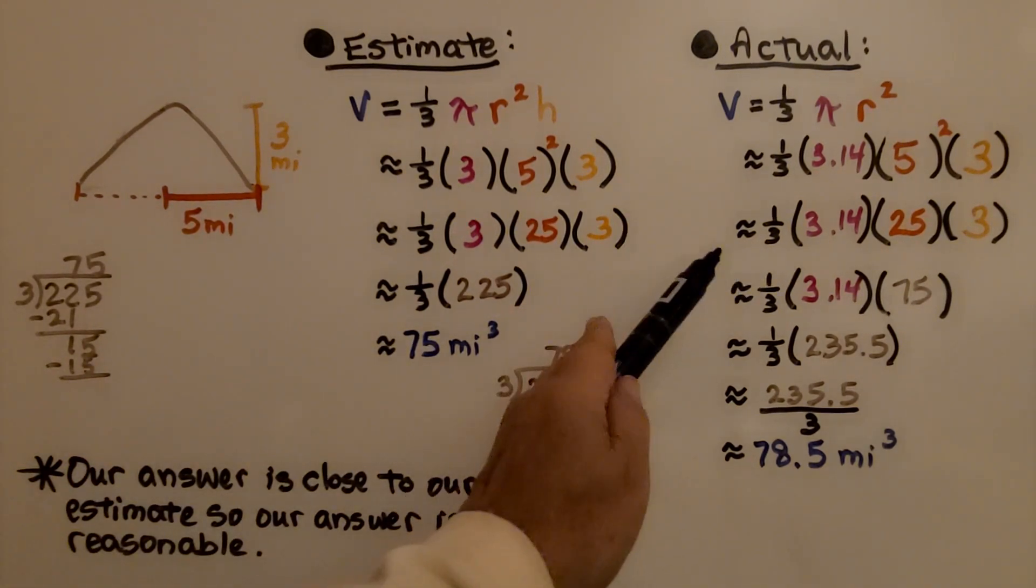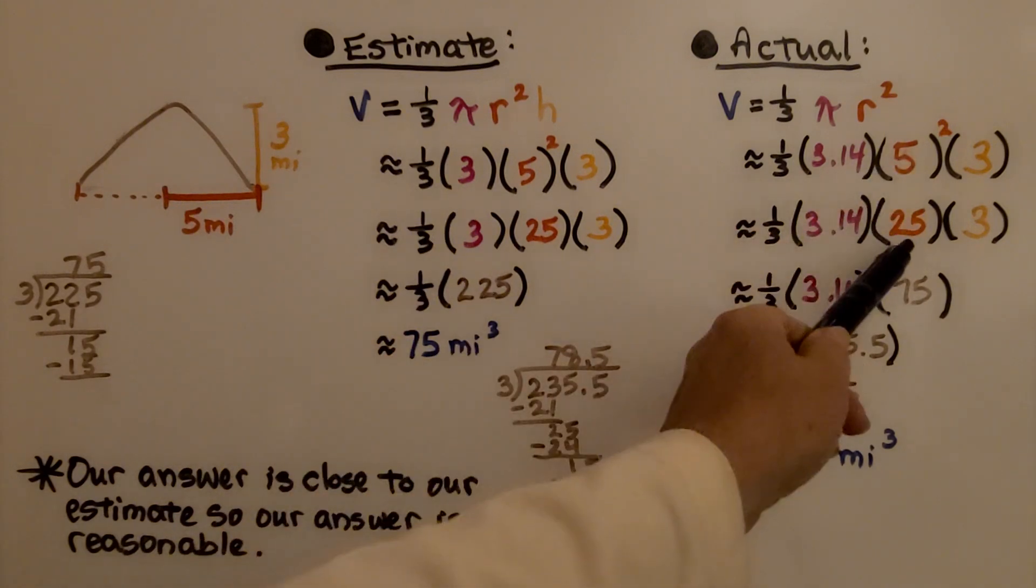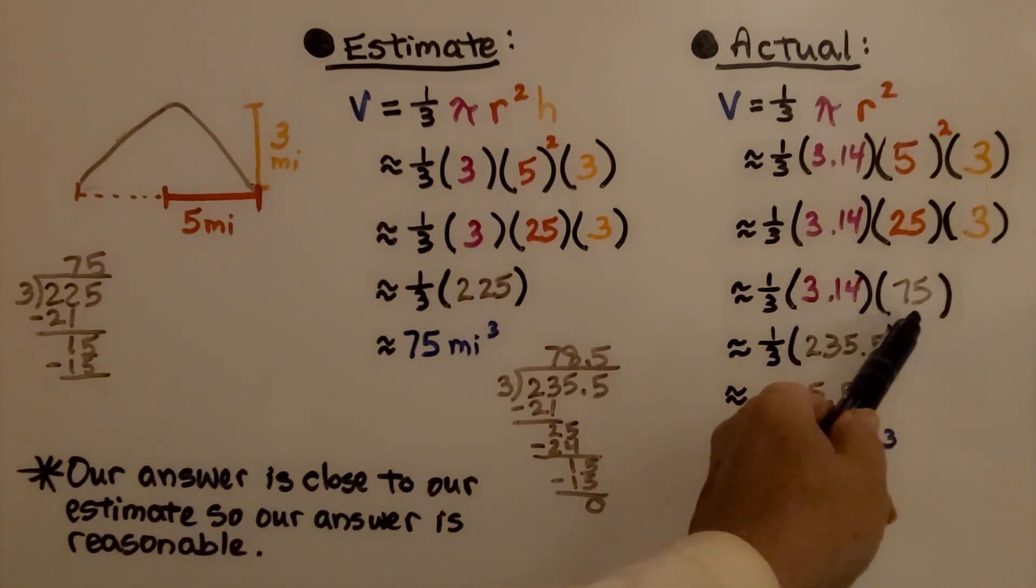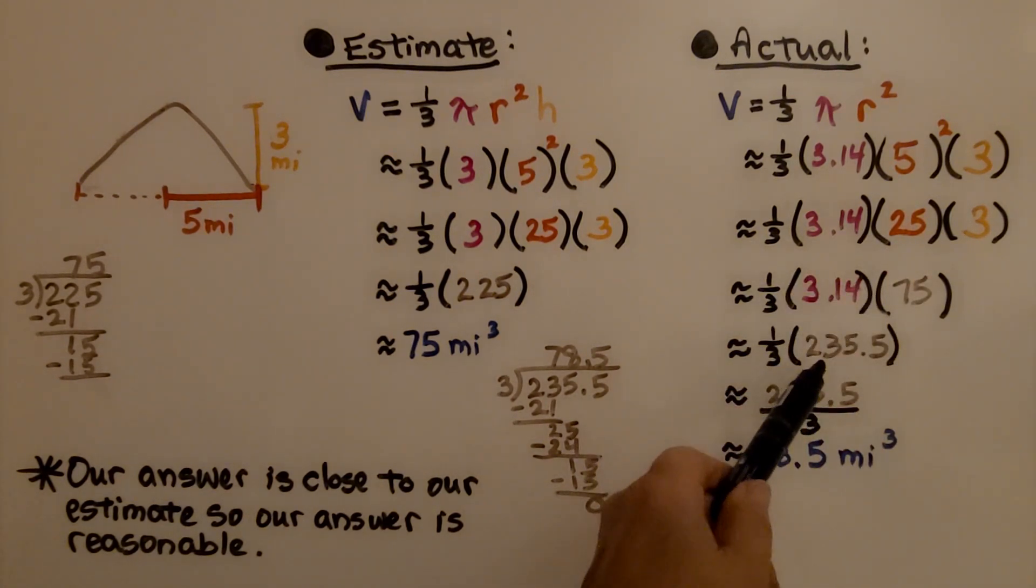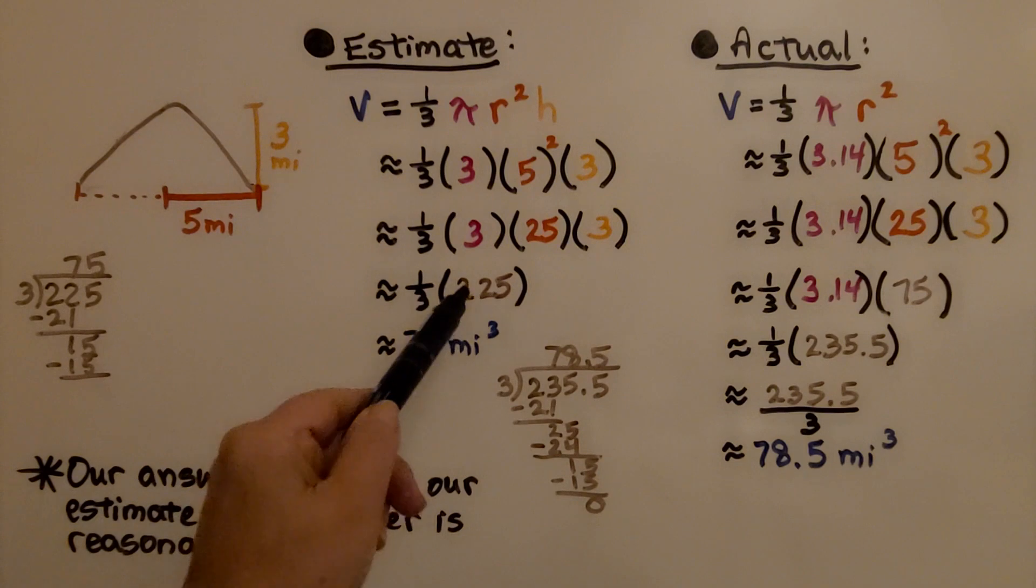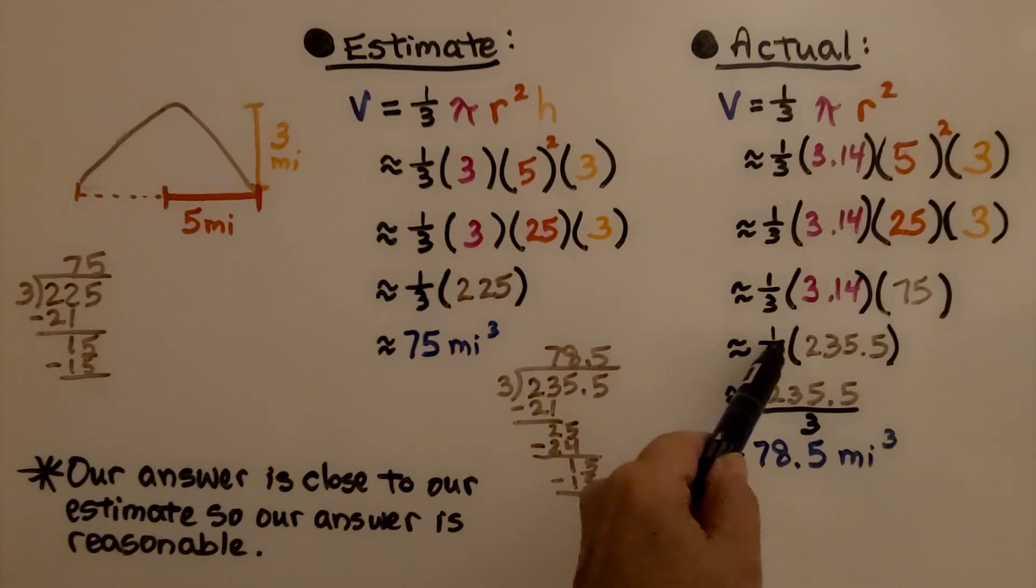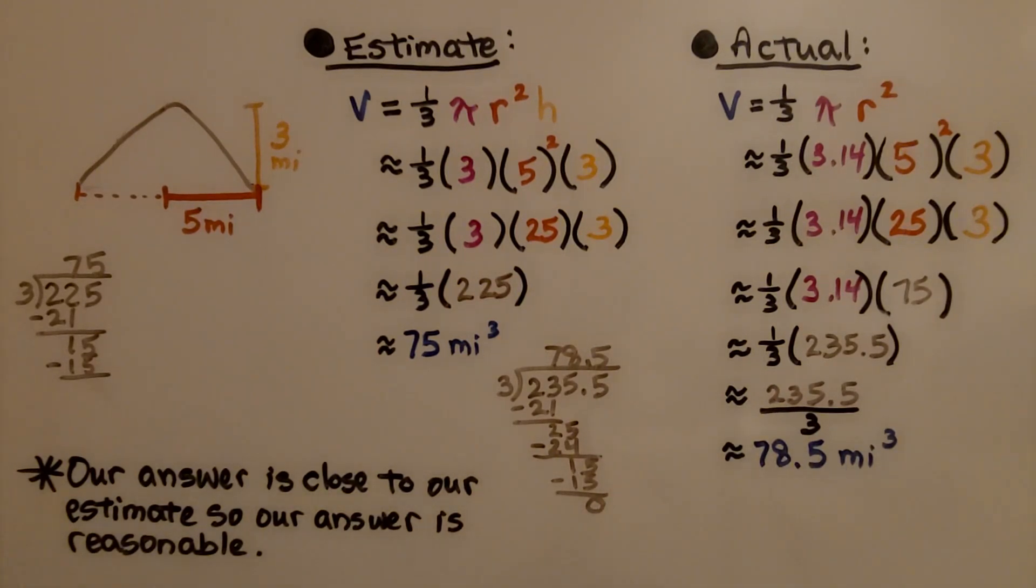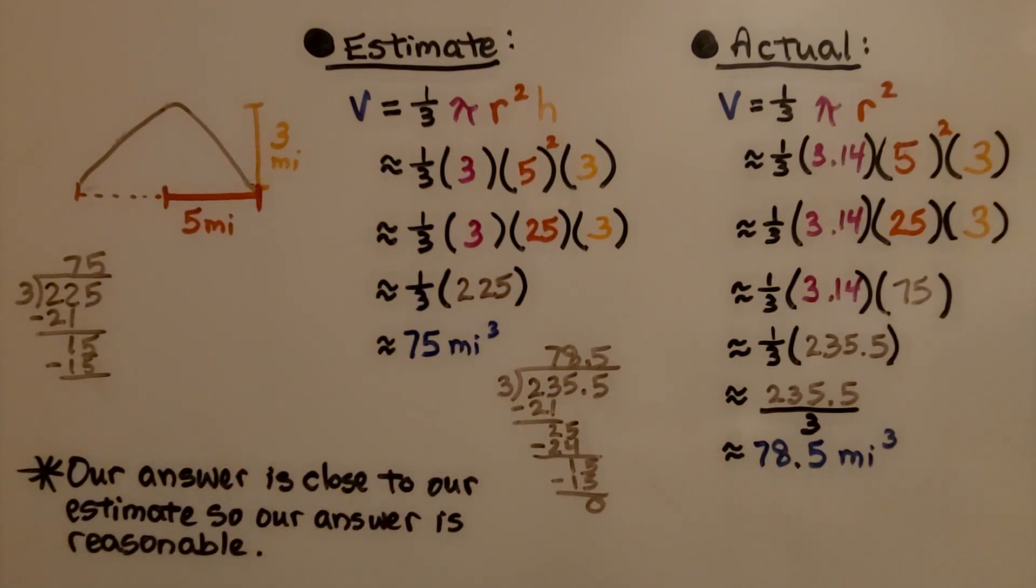When we actually do it, we're going to use 3.14 for pi. We've got our radius of 5, which gives us 25. We multiply it by the height 3 and get 75. When we multiply 75 times 3.14, we get 235.5. When we just multiplied it by 3 for pi to estimate, we got 225, so this is a little more accurate. We need to multiply it by one-third or divide it by 3, and we get 78.5 miles cubed. So it's very close. 75, 78.5. Our answer is close to our estimate, so our answer is reasonable.